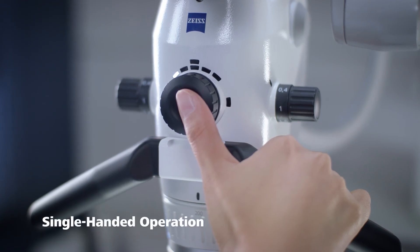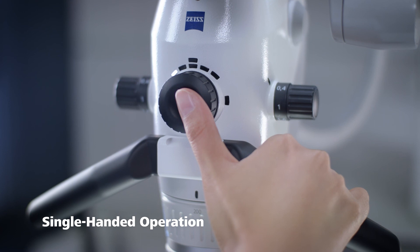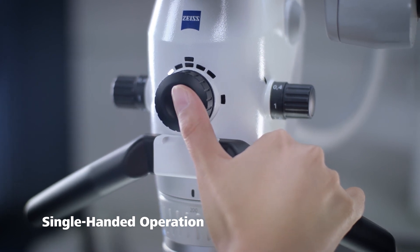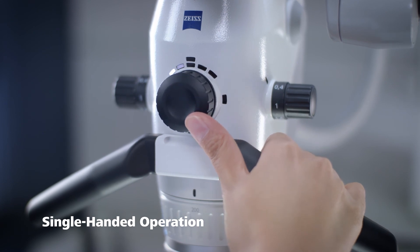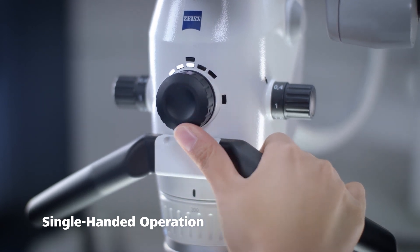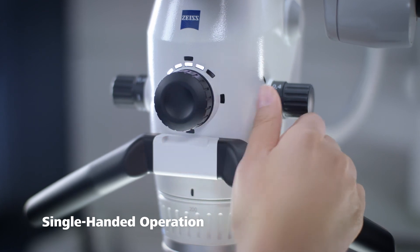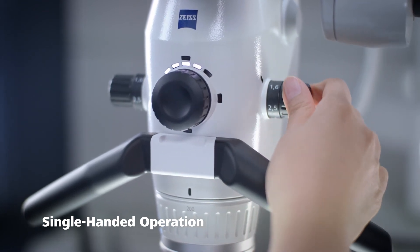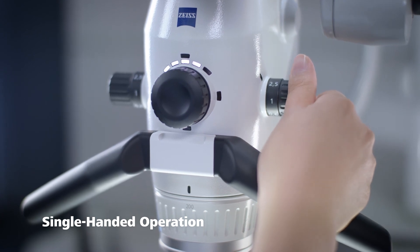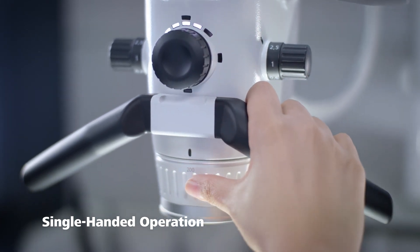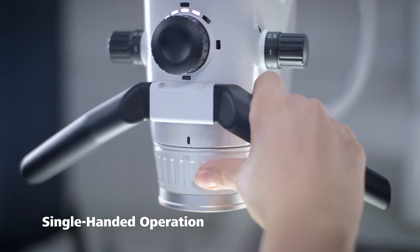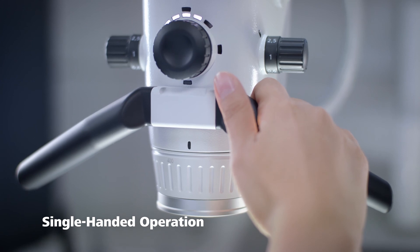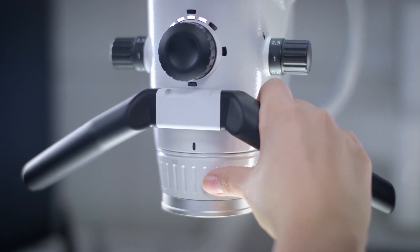The microscope body of the Zeiss Extaro 300 is designed in a way that you can reach the multi-functional mode control to activate all visualization and capture modes as well as the light settings with only one finger. From the same hand position you can adjust the magnification, change the working distance of between 200 and 430 mm with the varioscope 230. This enables an uninterrupted workflow during treatment in all situations.